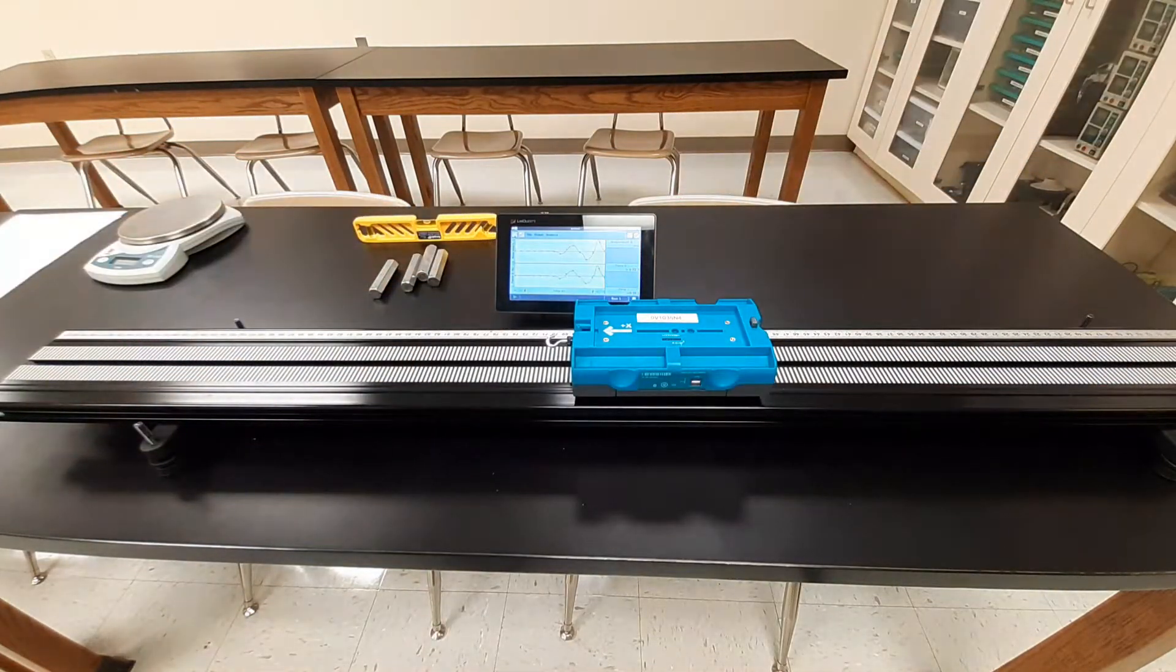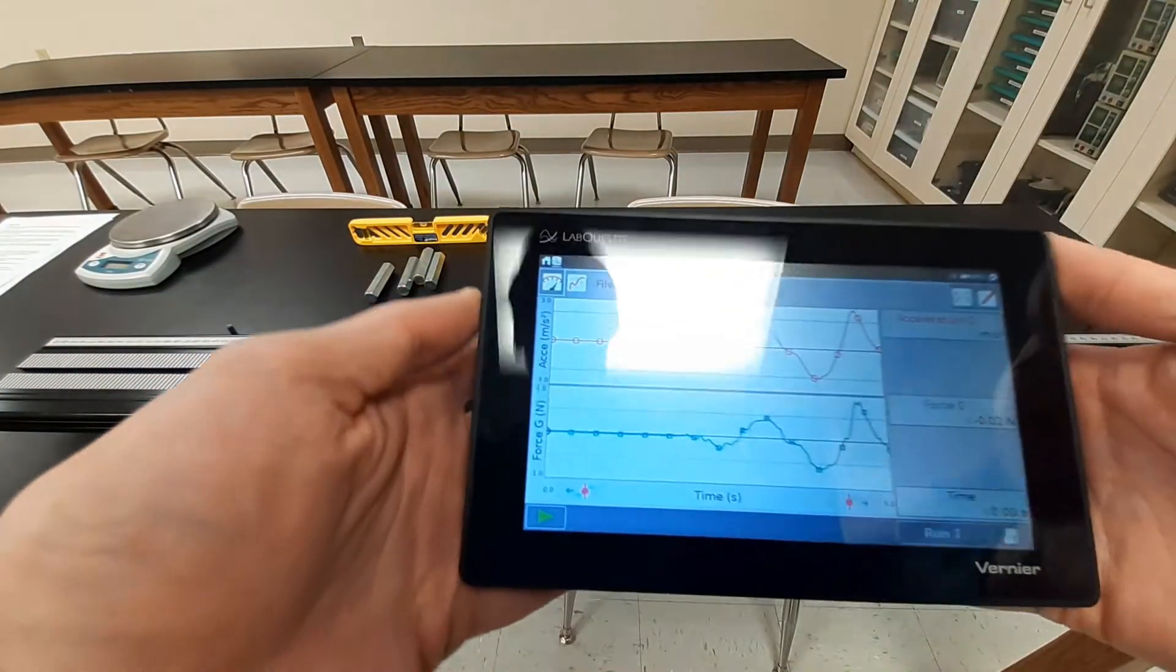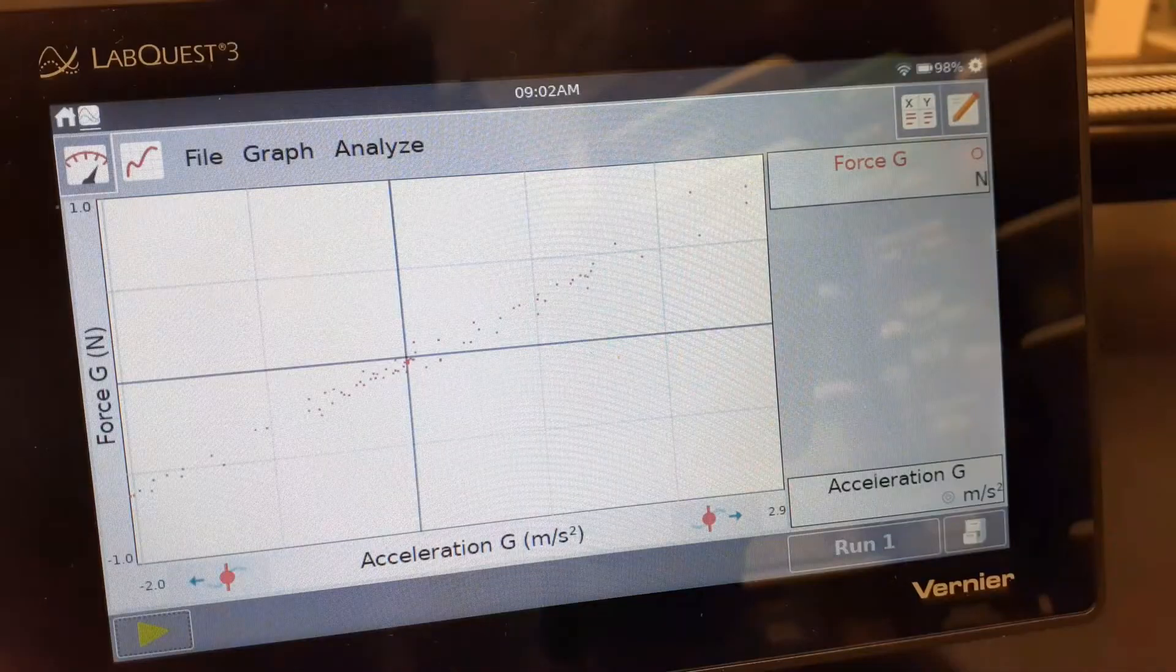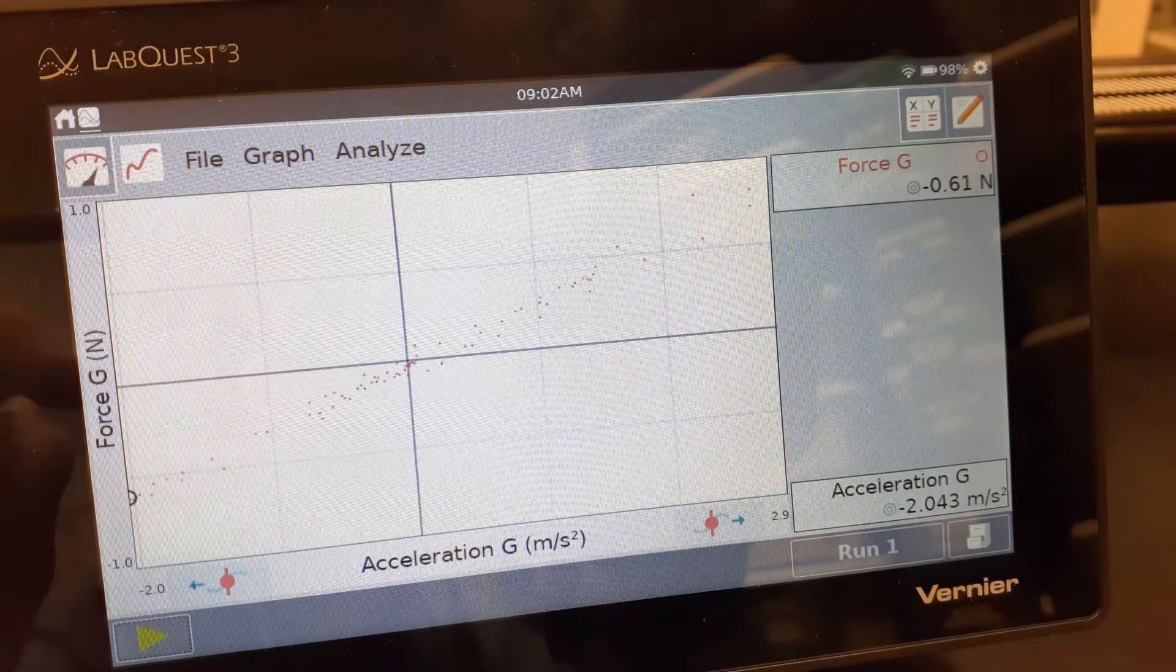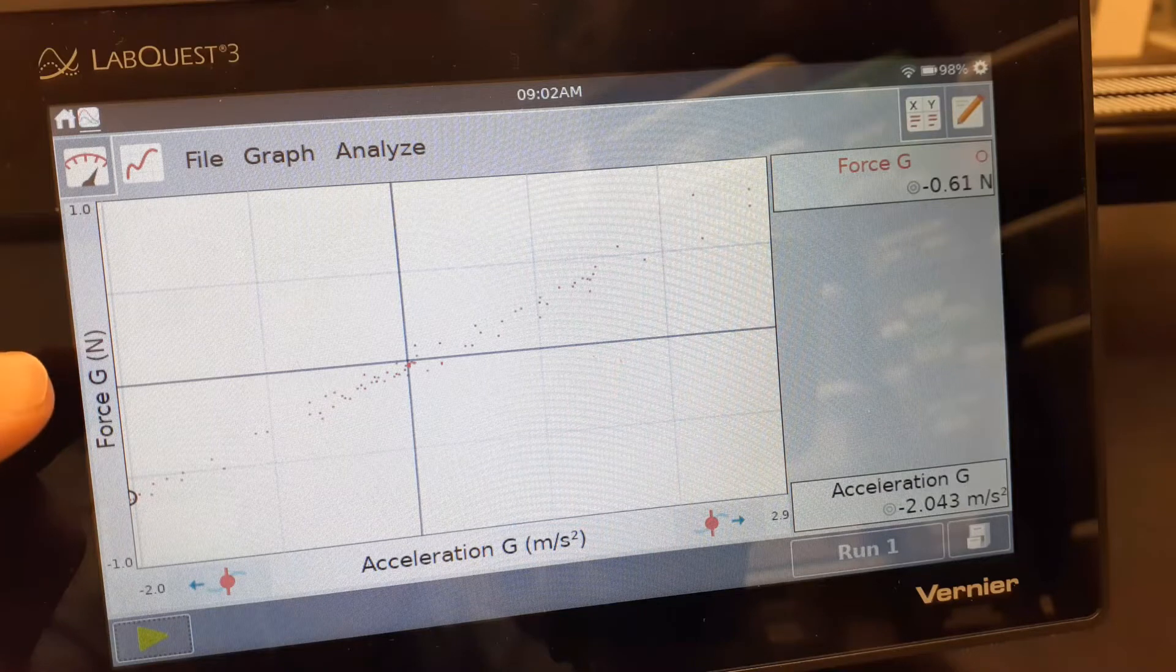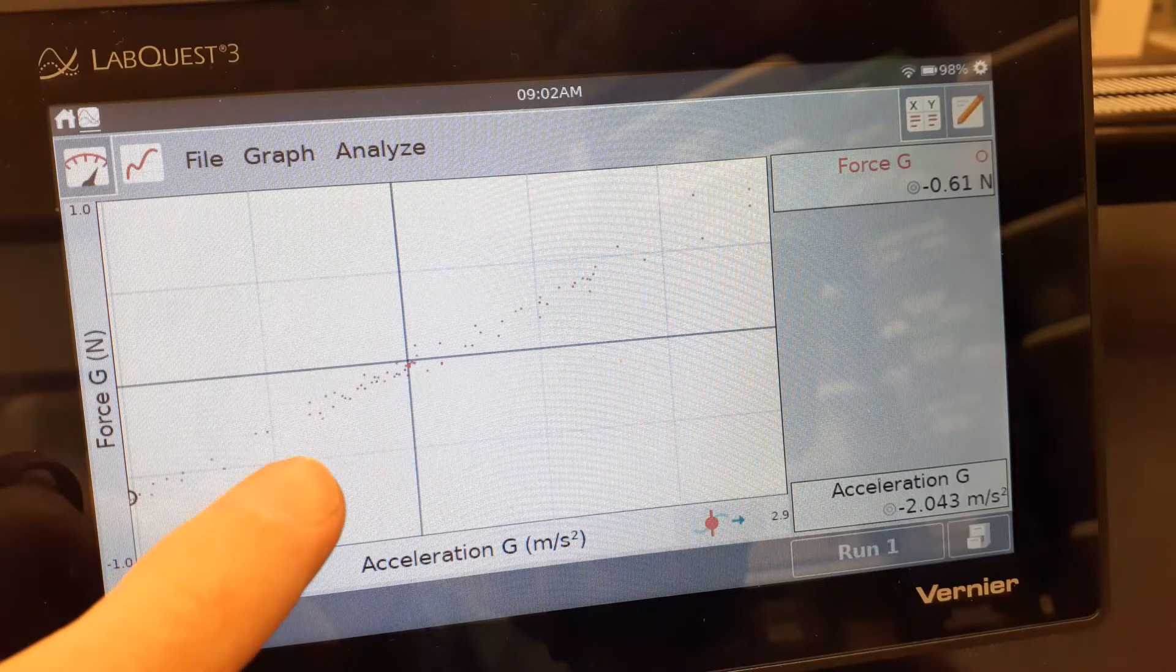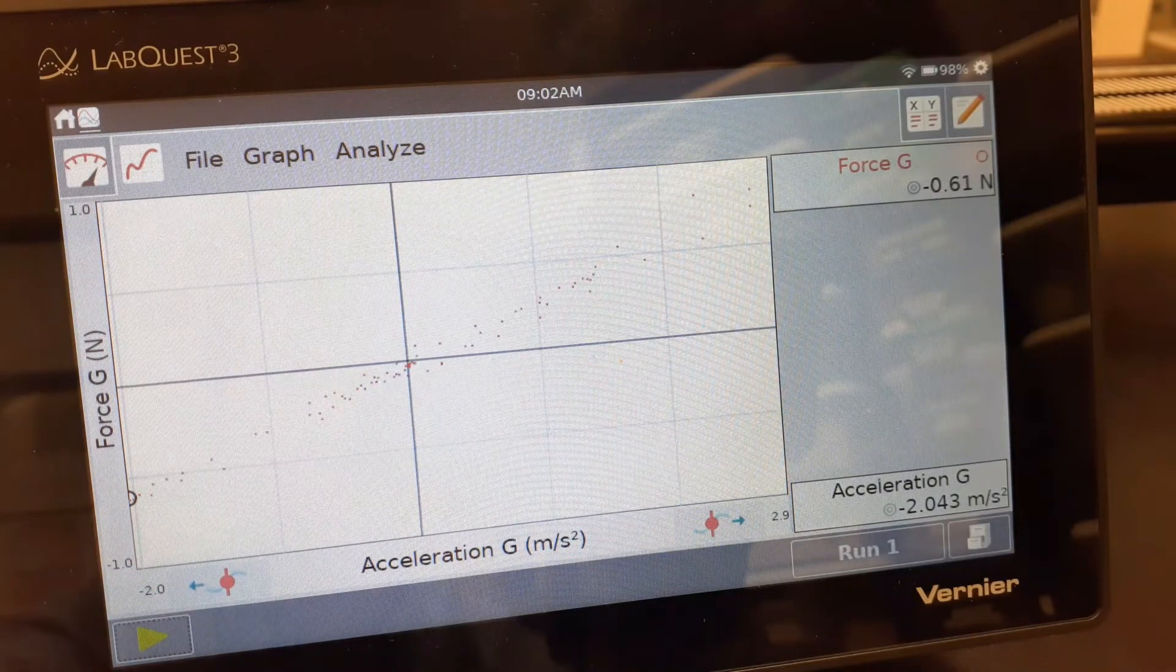So next thing that we're trying to do with this is basically turn this into one graph. What I've done is instead of having our two separate graphs before, I set my LabQuest up to just show one graph showing the force on the y-axis, the acceleration down here on the x-axis, and took off any kind of point connectors. So all you're seeing are the dots of data that the LabQuest was collecting for us.